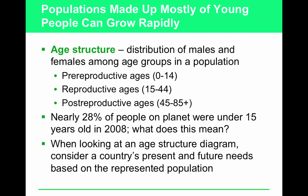Describe an age structure diagram. The x-axis is population as a number or percentage; the y-axis is the ages of the people, usually divided into five- and ten-year groups. The main difference between the two sides is gender — male on one side, female on the other. Know these: pre-reproductive ages are 0 to 14, reproductive ages are 15 to 44, and post-reproductive is everything else. This matters because where the population is most dense in terms of age lets us know what's going to happen in the next 20 years. If nearly 28% of the people on the planet were under 15 in 2008, very soon you're going to have a population explosion because those people are going to start reproducing.